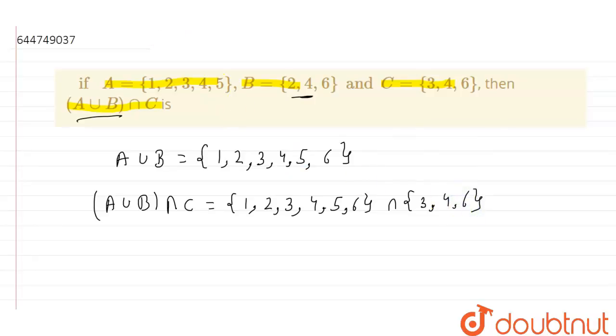Okay, so the common elements between these are 3, 4, 6. We have 3, 4, 6 in set C and 3, 4, 6 in set A union B. So our answer will be {3, 4, 6}.